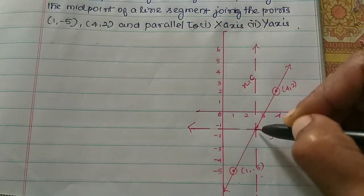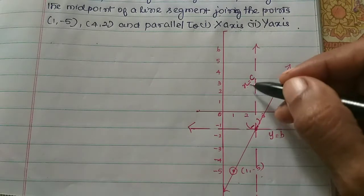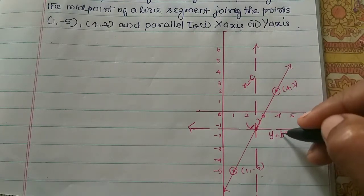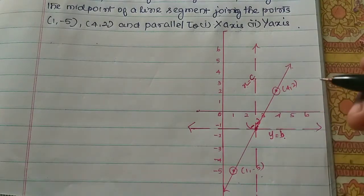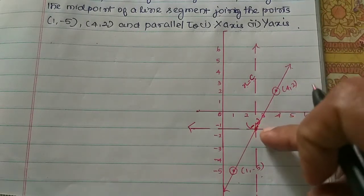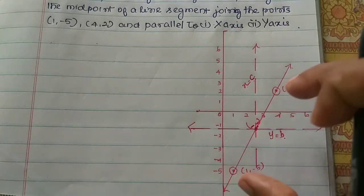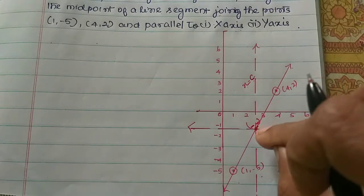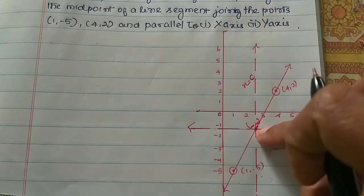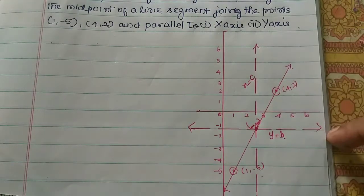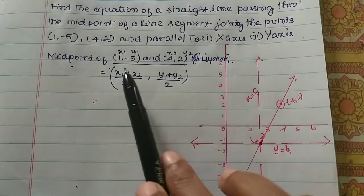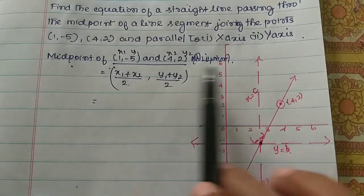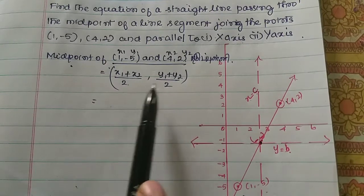If you have a point, x is equal to c, that's c. What is this point? It is the midpoint — the middle point. The midpoint of (1, -5) and (4, 2) is what we have to find. The midpoint formula is: x1 plus x2 divided by 2, and y1 plus y2 divided by 2.